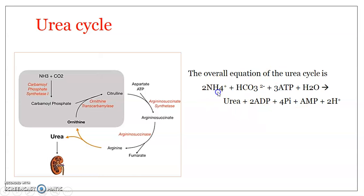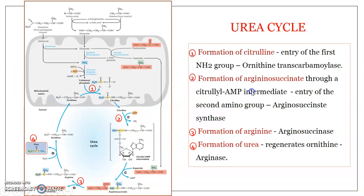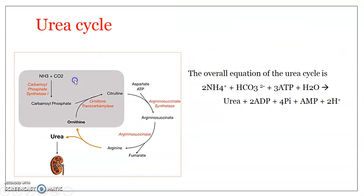The overall equation of the urea cycle: ammonium plus carbon dioxide (in the form of bicarbonate), plus ATP molecules and water, are consumed to produce urea, ADP, inorganic phosphate, AMP, and hydrogen ions.